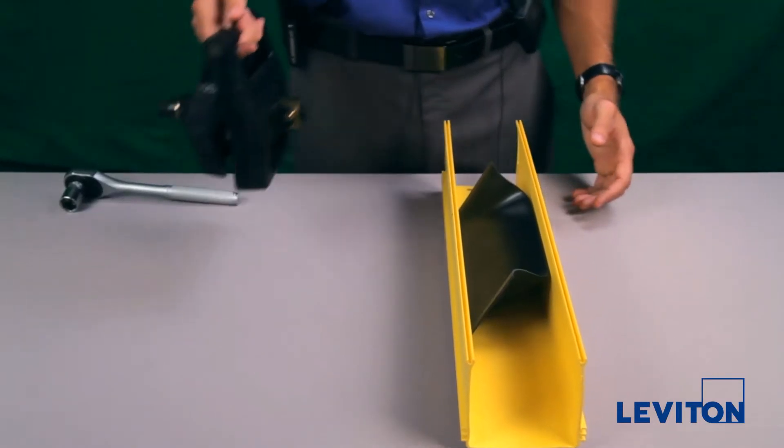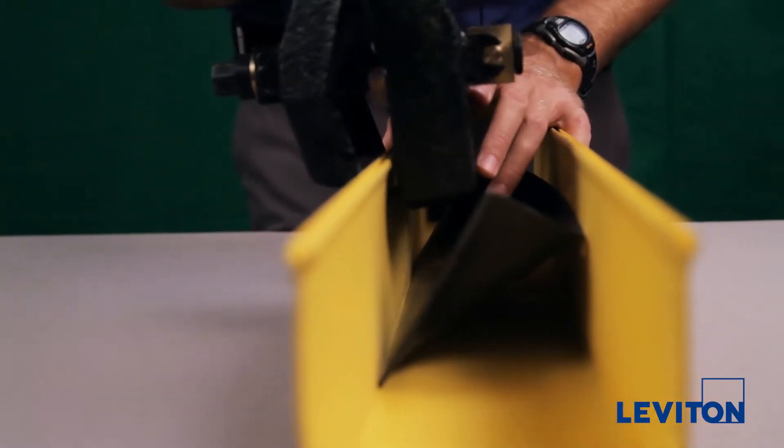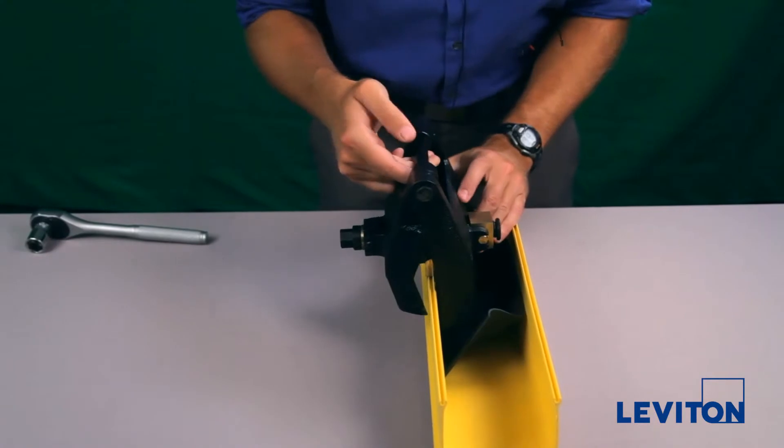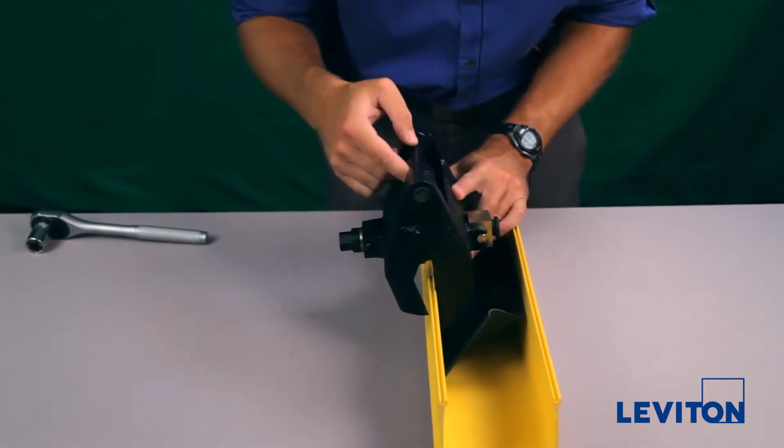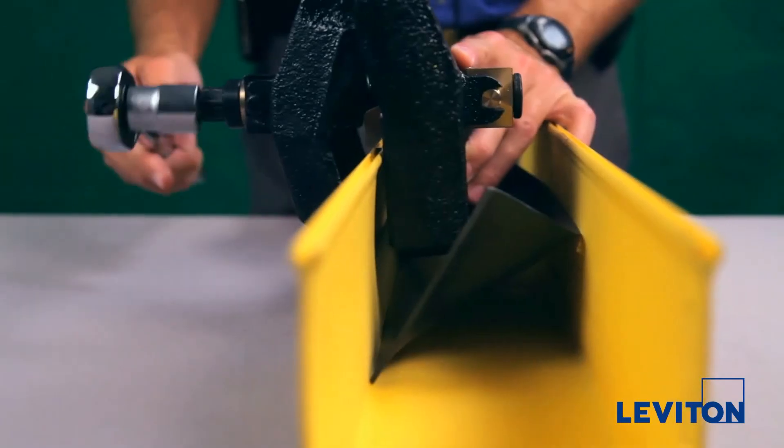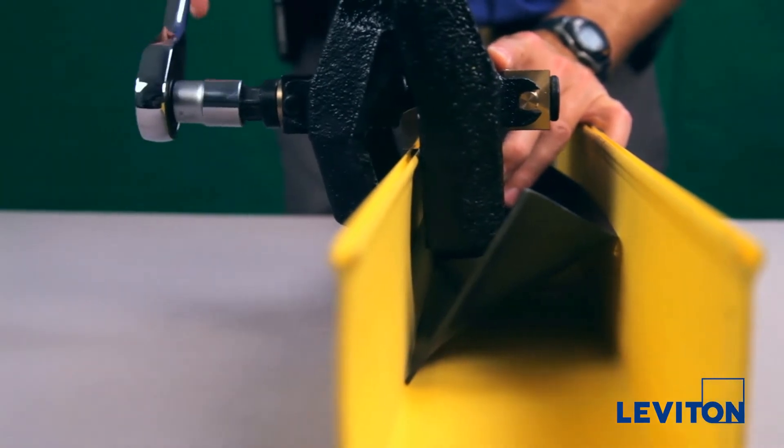Take the side cut out tool and insert it over the mark. Make sure the tool is centered on your mark because once you start ratcheting the wrench, the blade will start cutting through the duct.